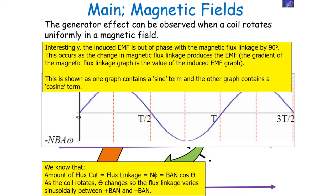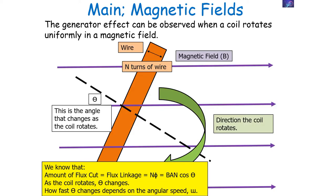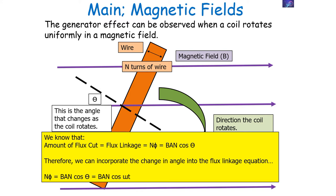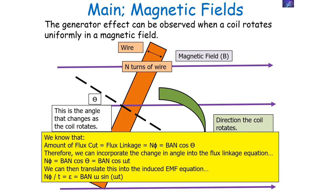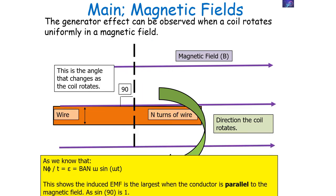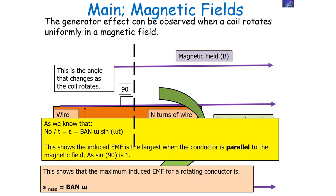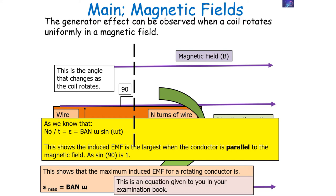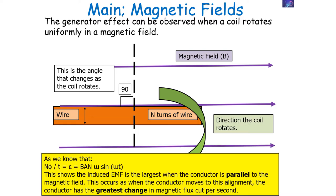One graph contains the sine term and the other the cosine term. How fast theta changes depends on the angular speed omega, and theta equals omega t. Substituting gives BAN cos theta equals BAN cos omega t. Since N delta phi over delta T equals EMF, we can rewrite this as BAN omega sin omega t, because the differential of cos omega t is omega sin omega t. The induced EMF is largest when the conductor is parallel to the magnetic field: sin omega t equals sin 90 equals 1. Therefore the maximum induced EMF for a rotating conductor is EMF equals BAN omega, which is given in your examination book.